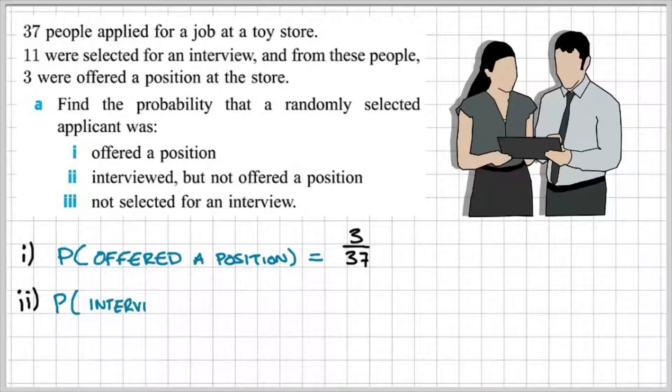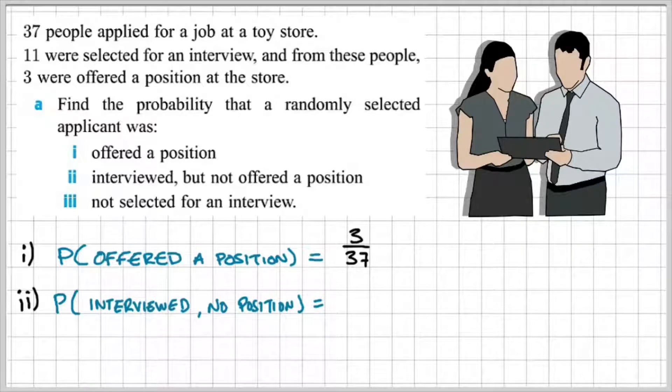Okay, so for part 2, the probability of being interviewed but not being offered a position. Well, we know that 11 candidates were selected for an interview. But out of these, 3 were offered a position. So we need to do 11 minus 3, which is 8 people who were interviewed but not offered a position. Now remember, the total possible outcomes is still 37. So that's going to be 8 out of 37.